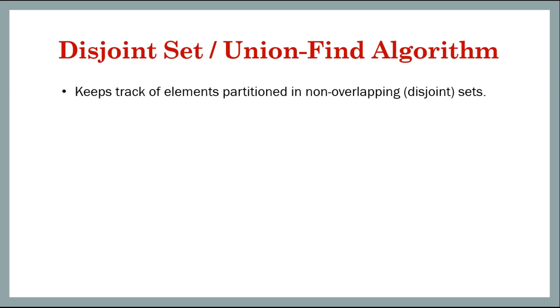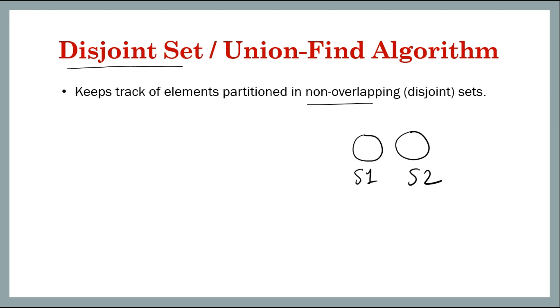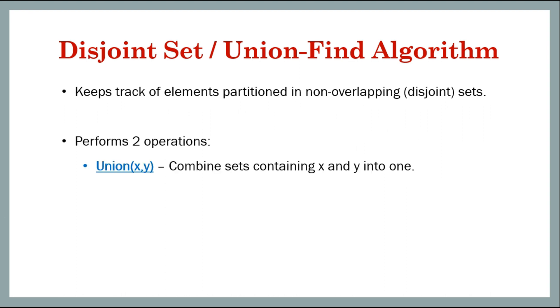First let's see what is a disjoint set or union-find algorithm. This disjoint set data structure is used to keep track of elements that are partitioned into non-overlapping sets — sets which do not overlap, that is, they are disjoint. It performs two major operations.